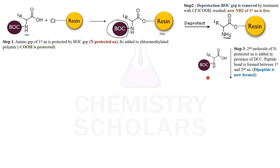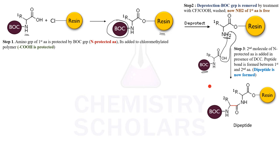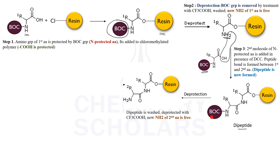Next is de-protection, where the BOC group is removed, freeing the NH2 group. The next step is to react with the next amino acid, which also has its NH2 group blocked. The H and OH are removed as H2O and the first peptide bond is formed. Two amino acids reacting gives a dipeptide. Next, we de-protect again by removing the BOC group.